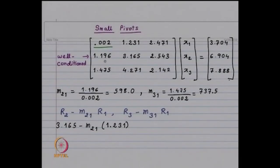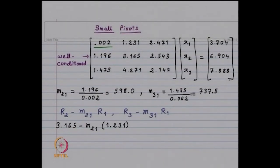Our pivot a₁₁ is a small number, so a₂₁/a₁₁ will be a big number. So we will be subtracting large multiples of the first row from the second and third rows. The multiplier m₂₁ = a₂₁/a₁₁ = 1.196/0.002 = 598.0. Note that this trailing zero is significant when retaining 4 digits. Similarly m₃₁ = a₃₁/a₁₁ = 1.475/0.002 = 737.5. The operations are r2 - m₂₁·r1 and r3 - m₃₁·r1.